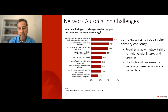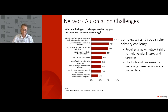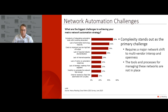Moving toward automation: survey data on what are the biggest challenges for network operators to achieve their automation strategies shows that complexity stood out as the primary challenge — this has come up in multiple surveys. As we look at automation moving forward, we see a major shift required toward multi-vendor interoperability and openness. We've talked about openness throughout this webinar, and in the final stretch we'll cover more specifics on where openness plays into this particular architecture.